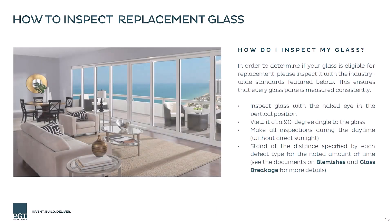Whenever eligible replacement glass is sent to a customer, it is important to inspect thoroughly using the steps we've learned in this video. Key things to remember are to look through the glass straight on, use proper viewing distances and times based on the glass size, and to do your best to differentiate between blemishes, chips, and breaks before checking the tables for replacement eligibility.